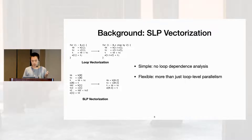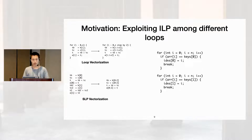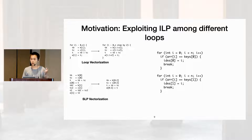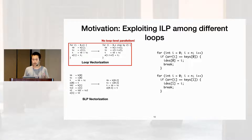I'll explain the problem we want to solve with an example. We have two independent loops that go over the same array but search for different keys. Because the loops are independent, we want to exploit that parallelism and vectorize them. Loop vectorization doesn't work here fundamentally because the parallelism spans across these two disjoint loops, but not within any of the individual loops.